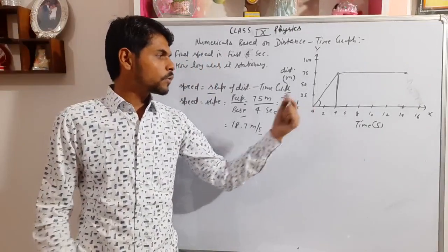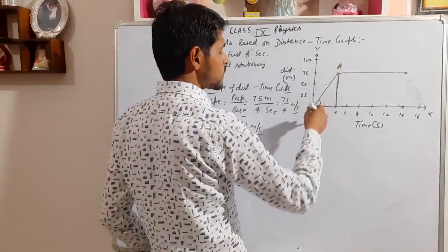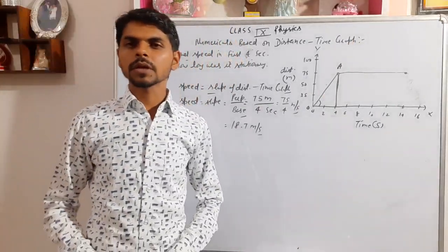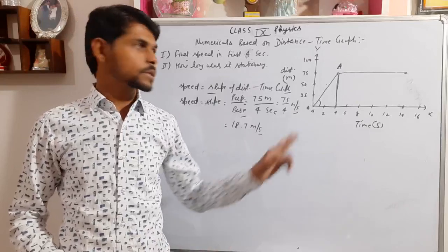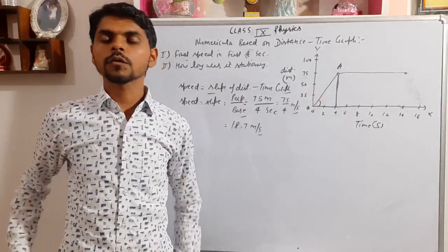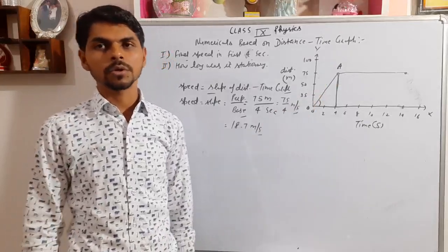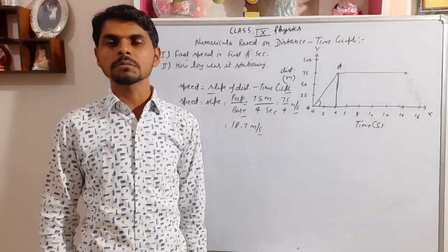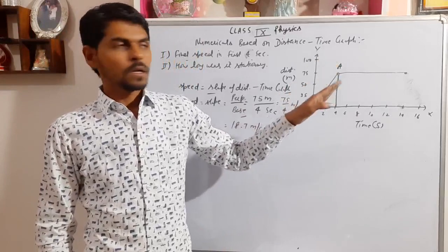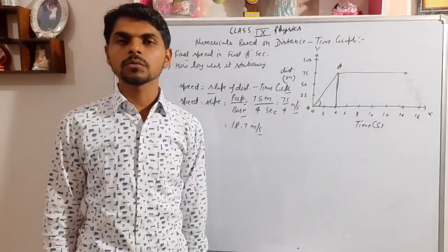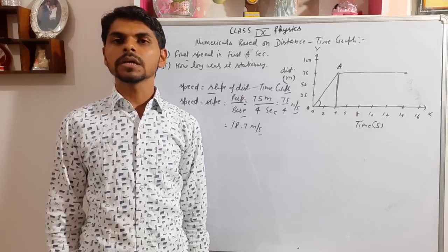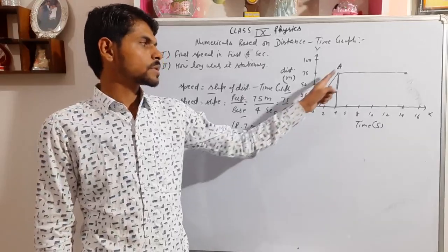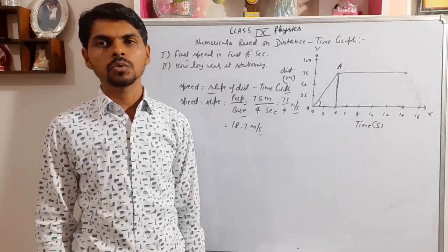Looking at the graph from O to A, this is a straight line. It means the body is moving uniformly — this is uniform motion from O to A. We discussed in the previous lecture that if a distance-time graph is a straight line, that is called uniform motion, meaning the body covers equal distance in equal intervals of time.